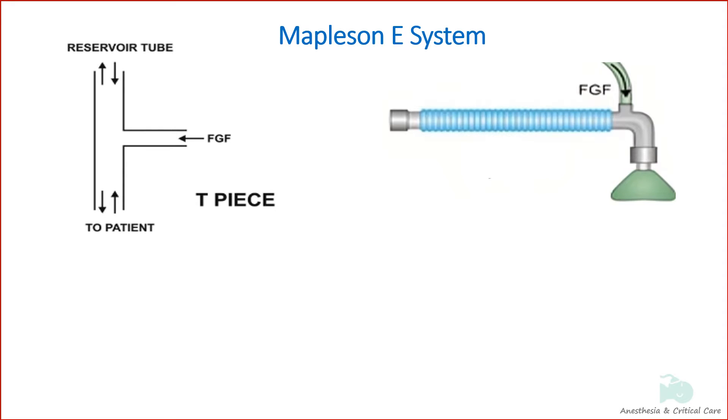Mapleson E, also known as Ayre's T-Piece, was invented by Philip Ayre in 1937.